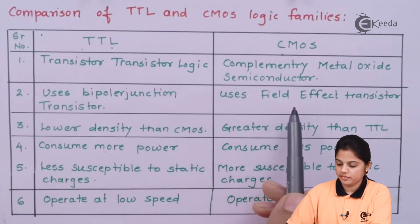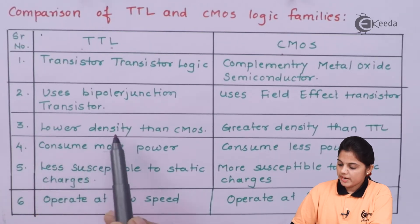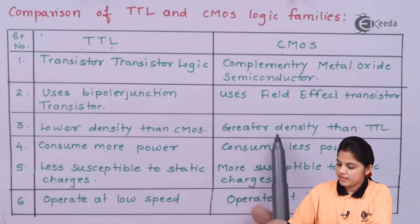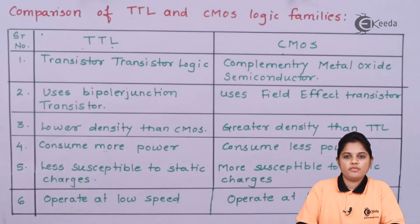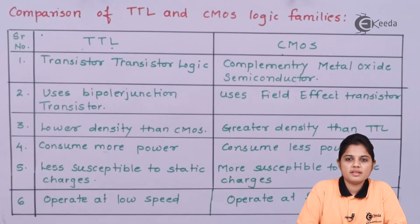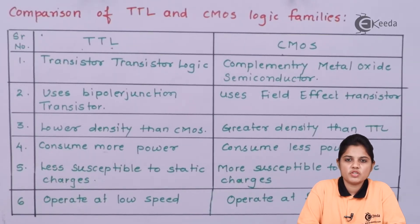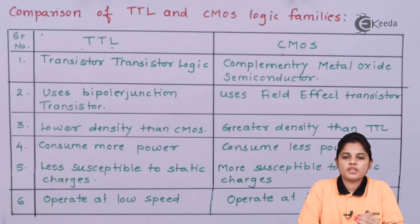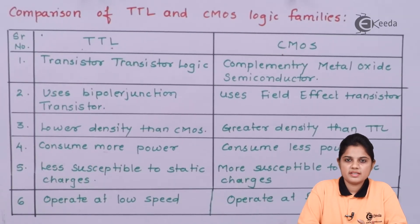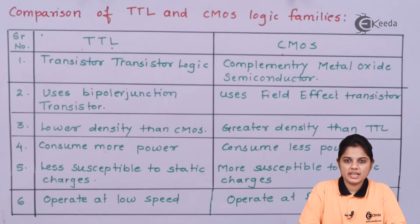Third, TTL has a lower density than CMOS — CMOS has a greater density than TTL. If you use Transistor-Transistor Logic, fewer components and logic gates can be fabricated on a single chip. But with CMOS technology, you can integrate more components on the same chip, so the density is greater than TTL. This is a good advantage of MOS technology.